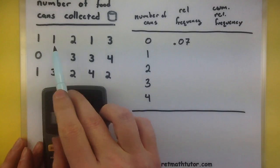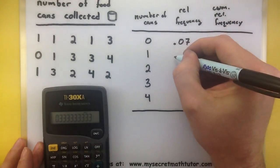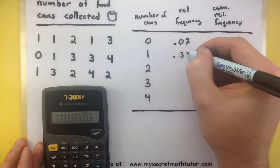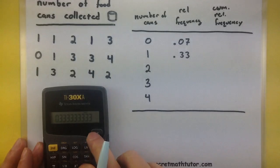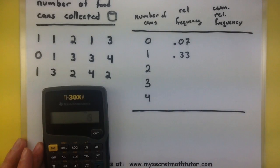I see 1 appears 1, 2, 3, 4, 5 times, divide that by 15, I get .33. Let's see, 1, 2, 3 twos, divide that by 15, .20.